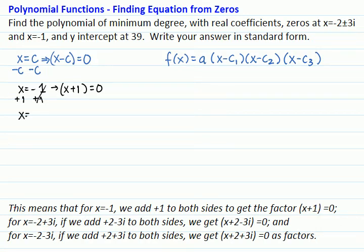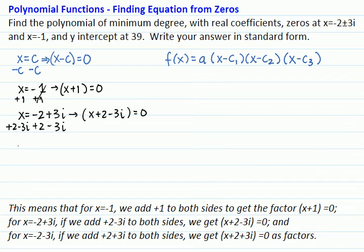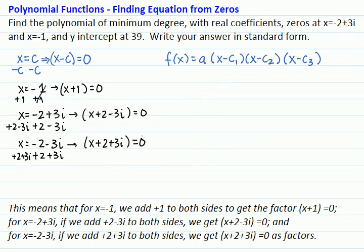And for the zero x equal to negative 2 plus 3i, if we add plus 2 minus 3i to both sides, we will get x plus 2 minus 3i as our second factor. And for the zero x equals negative 2 minus 3i, if we add plus 2 plus 3i to both sides, we will get the factor x plus 2 plus 3i for our factorization.